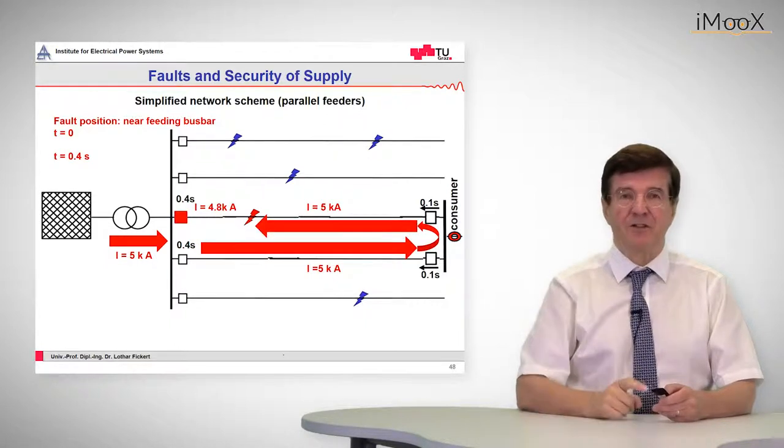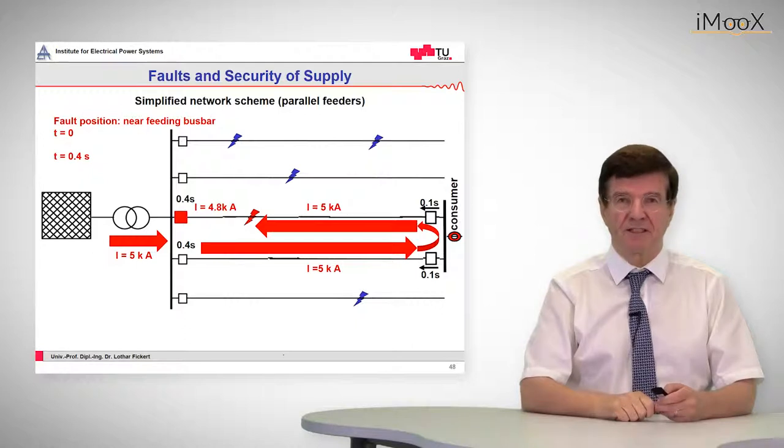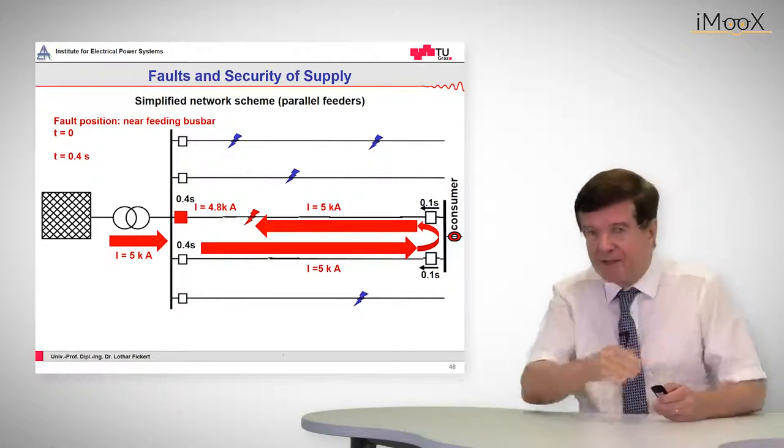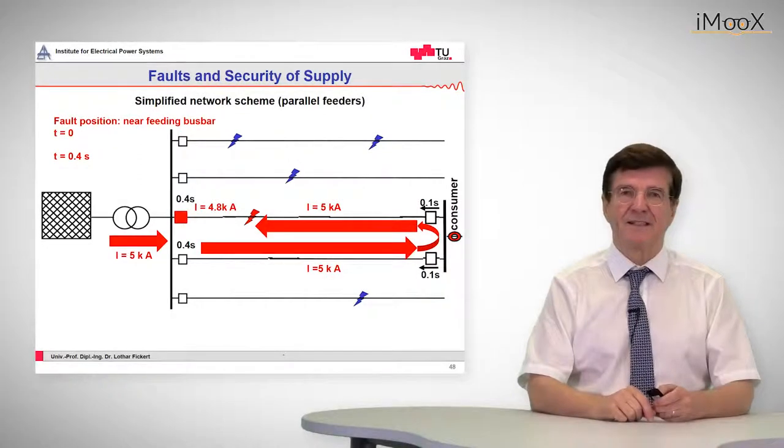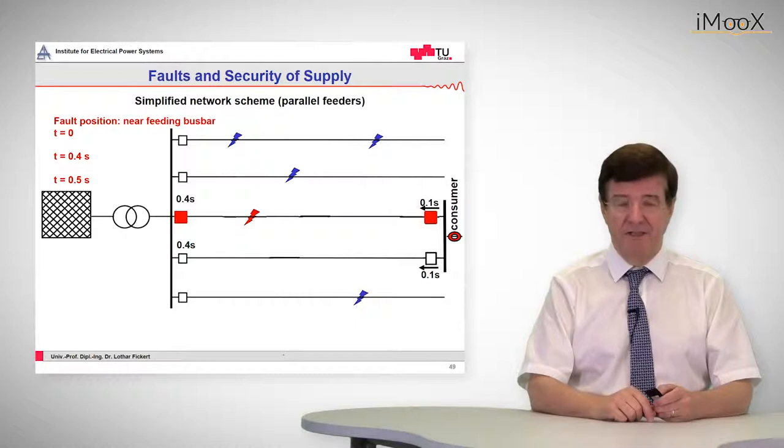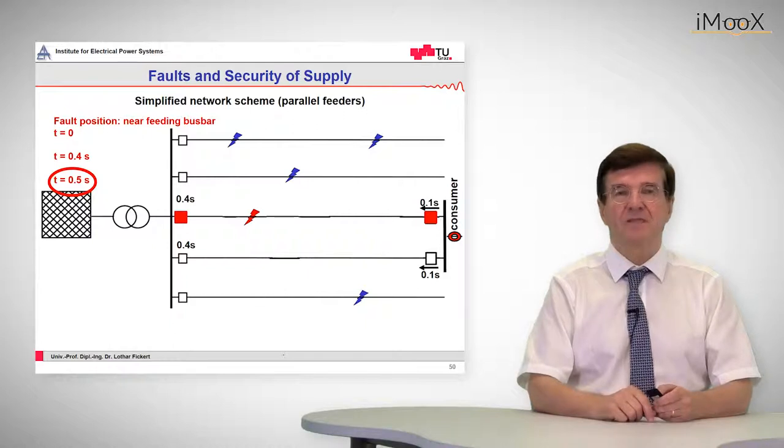It will trip after 0.4 seconds and at that very moment the short circuit will come the other way around. That means now the relays that sense this increased current will pick up and after one additional 0.1 second the second relay will trip out. So the whole clearing time now is 0.5 seconds.